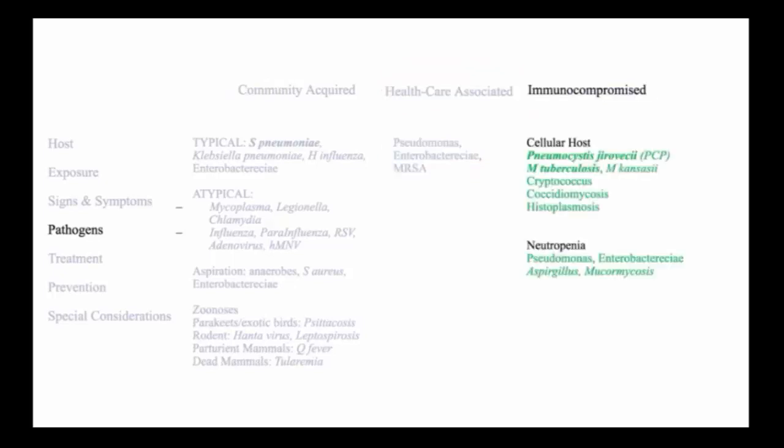In the immunocompromised host, I will concentrate on the cellular deficient host, where the major pathogens include pneumocystis, MTB, and non-tuberculous mycobacteria, and then fungal pathogens, including cryptococcus, coccidioidomycosis, and histoplasmosis. In the neutropenic host, you consider gram-negative pathogens, including Pseudomonas, and fungal pathogens, including Aspergillus and mucormycosis.